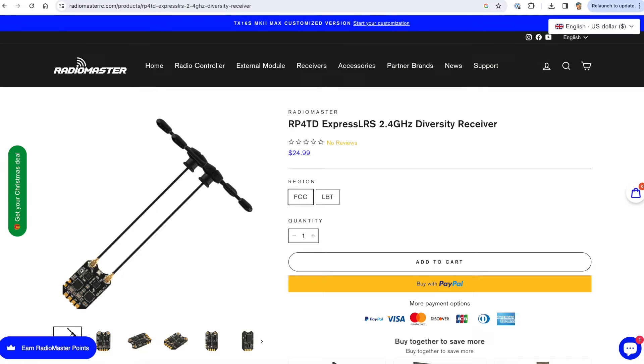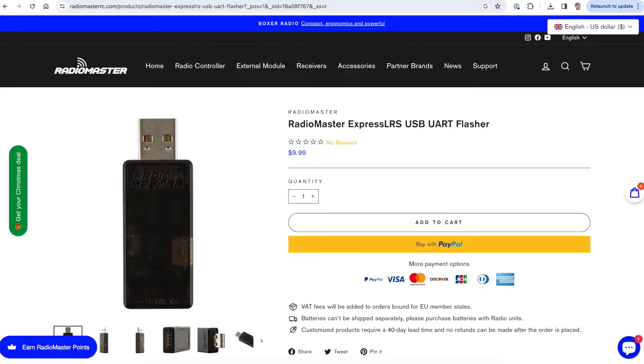And this RP4 TrueDiversity receiver is a great product and I'm particularly excited that it's ELRS Gemini mode compatible. I've said this before but I predict that 2024 will be the year of Gemini mode because it adds so much more reliability and stability particularly for long range and cine lifters with expensive payloads. Both these are available direct on the RadioMaster website and I'll put links in the description so that you can check out the latest prices and availability.